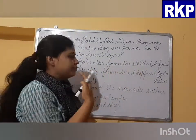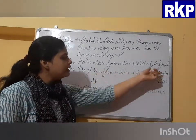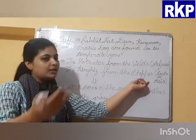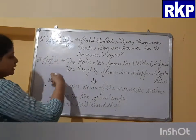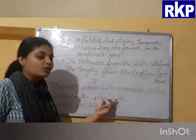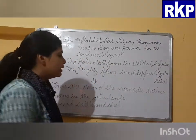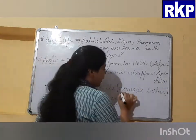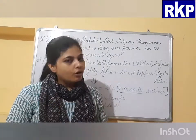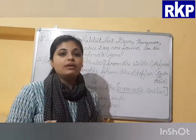People who live in the temperate grasslands include the Hottentots from the Velds in Africa, and the Kirghiz from the Steppes in Central Asia. These are nomadic tribes living in the grasslands. Nomadic people are those who move from one place to another in search of water and food, taking their animals with them.